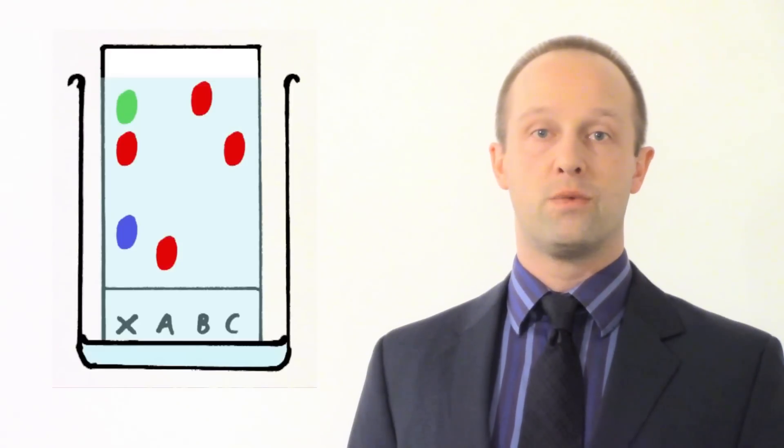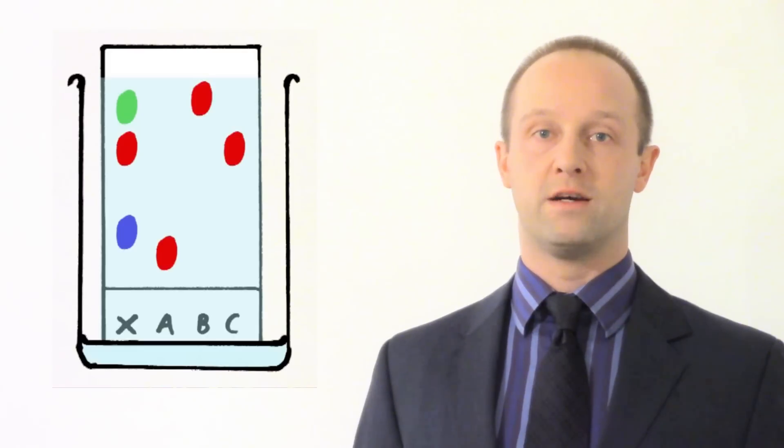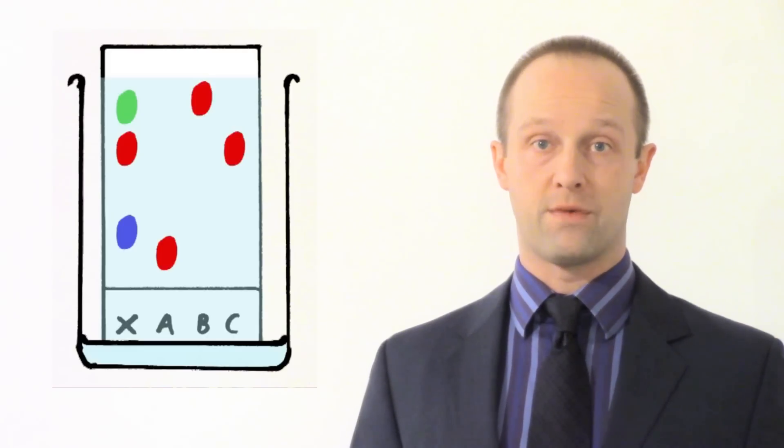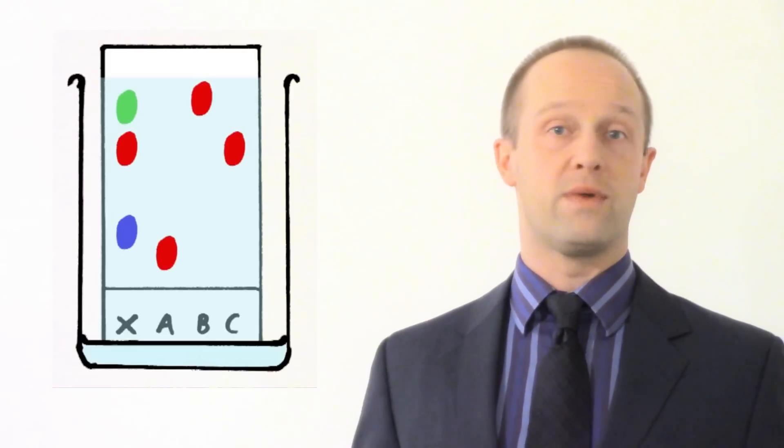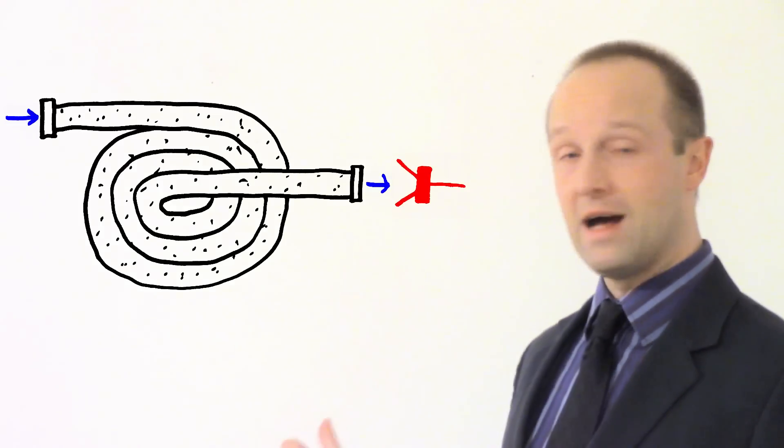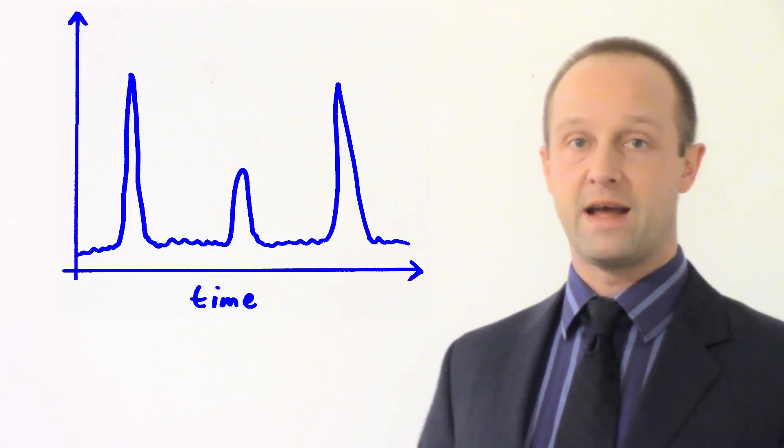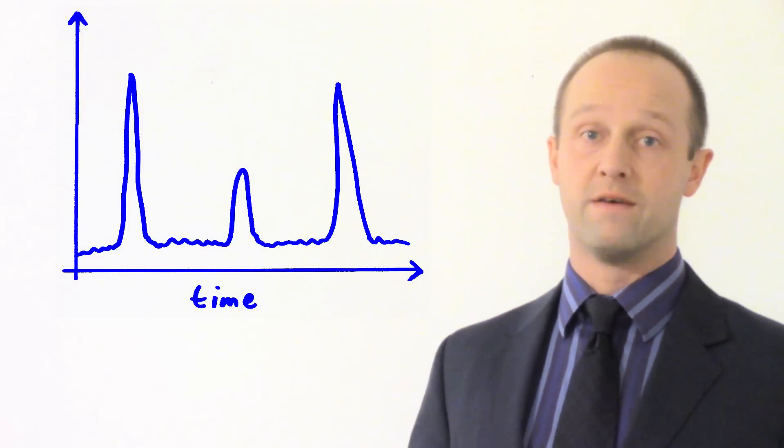So in paper chromatography we look at the height that those different substances have moved and we match it up to known samples of whatever we're investigating and where we get a match we say that it's the same compound. With gas chromatography then we're doing pretty much the same thing but what we do is time how long it takes the compounds to get to the end of this tube or this column and as they get there we can detect them and we'll plot them on a graph next to the time which they were emitted from that column.